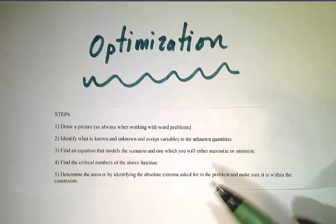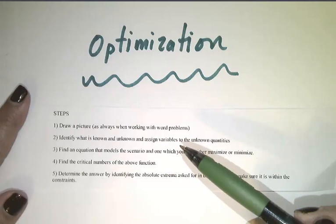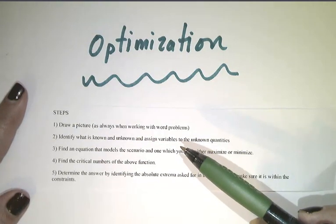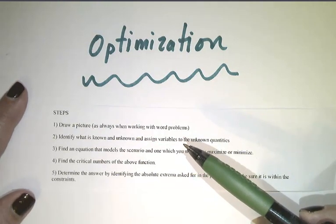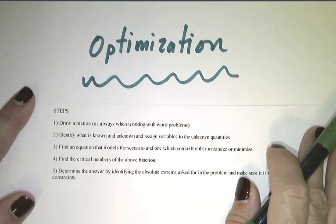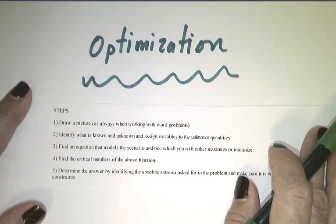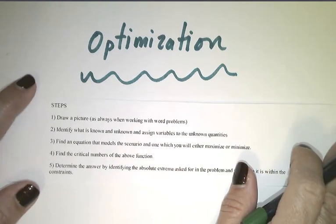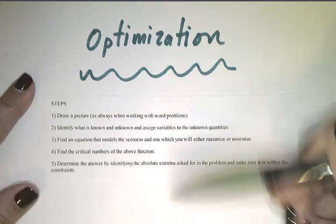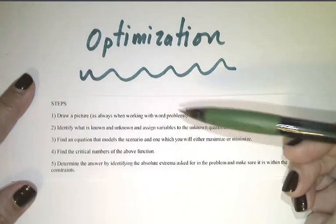Alright, second to related rates, optimization is our favorite word problem in Calculus 1. These are problems that are asking us to maximize or minimize a certain function. And we're going to just look at a couple of the strategies, but they'll make more sense when we see them in action.